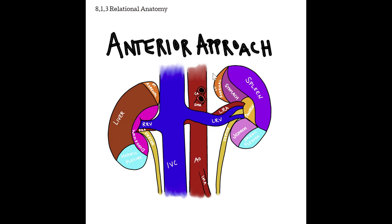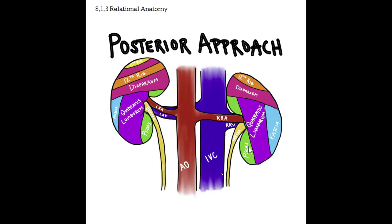This image illustrates how many organs the kidneys come in contact with in the body — an anterior approach looking from the front toward the back. We see the IVC towards the patient's right and aorta towards the patient's left. The right kidney is in contact with the liver, right adrenal gland, duodenum, and hepatic flexure on its anterior side. The left kidney sits a little bit higher and more lateral, in contact with the left adrenal gland, spleen, stomach, pancreas, duodenum, and the splenic flexure.